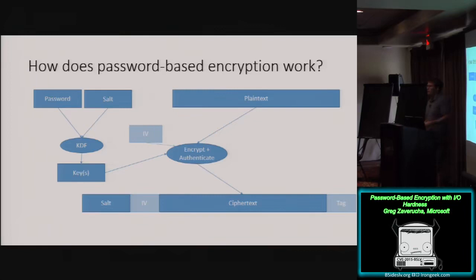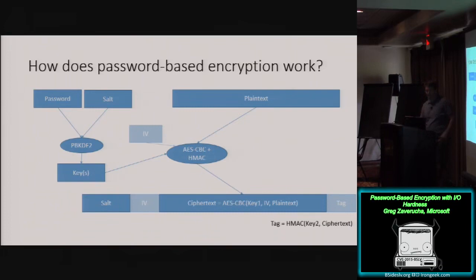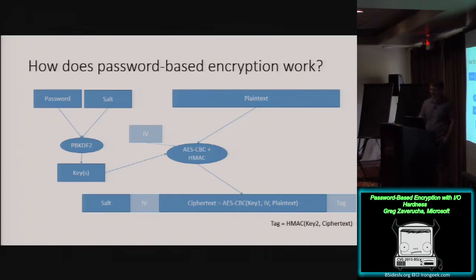We also want to authenticate our ciphertext using a MAC, so there are actually two keys that are derived. We don't just encrypt — we authenticate as well, and there's a tag output at the end. Some concrete examples: you might use PBKDF2 for your key derivation, which is an iterated hash function, and AES-CBC and HMAC are examples of encryption and authentication algorithms.